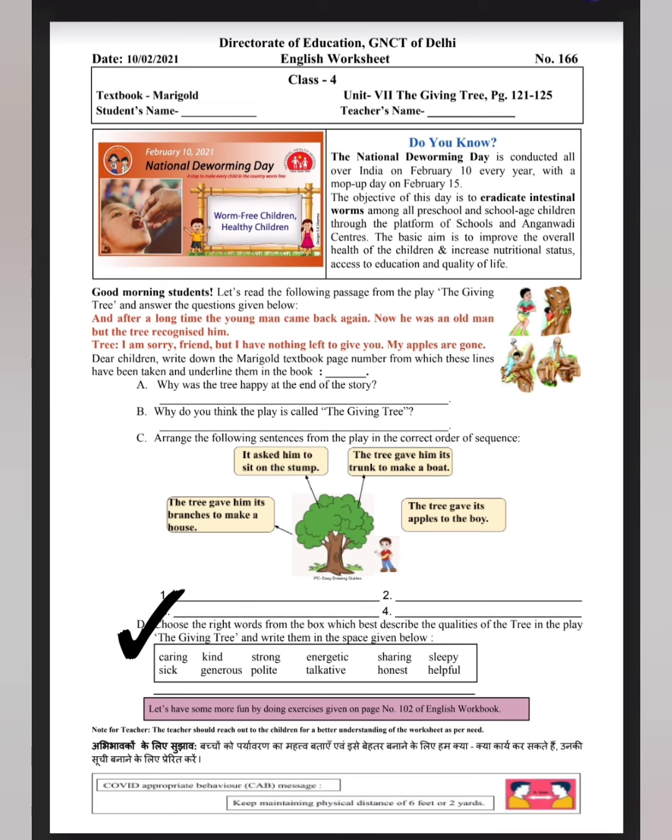Choose the right words from the given box which best describe the qualities of the tree in the play The Giving Tree and write them in the space below. You have to do that. In the help box, you will have a few words. From this, which is the quality of the tree? The words that best describe the tree, you can write.